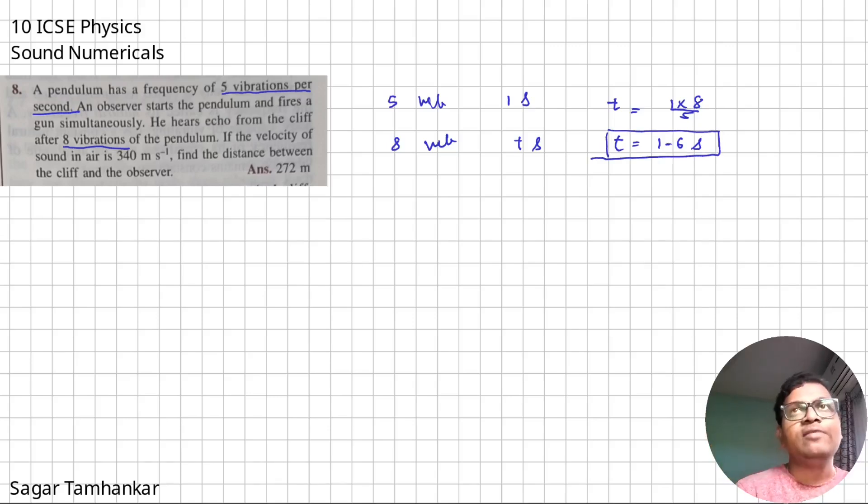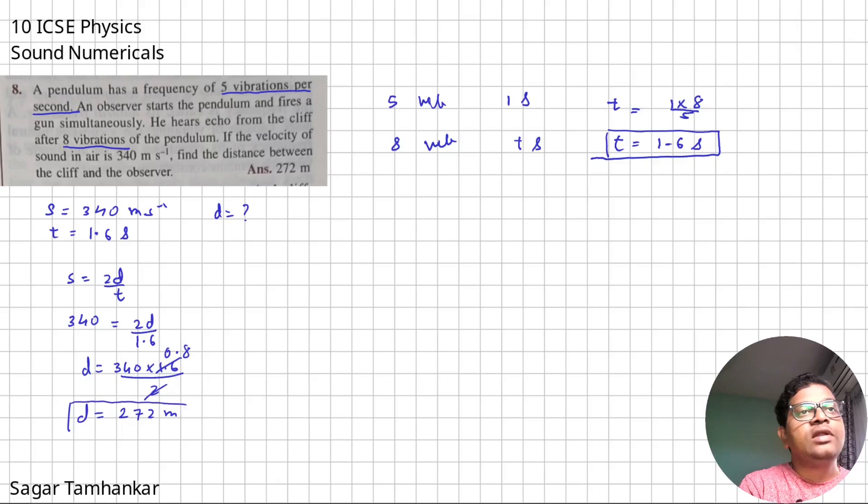Till now, whatever questions we did, the time was mentioned. Here, we have to do a little more to get the time. So speed is given as 340 meters per second. Time is given as 1.6 seconds. And again, they are asking for D. So S equals 2D over T. So that means 340 equals 2D over 1.6. 340 into 1.6 upon 2, this will be 272 meters. That is the final answer.